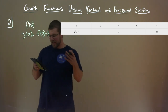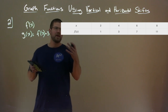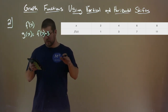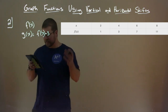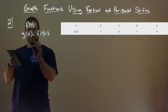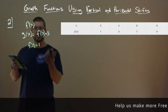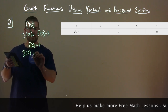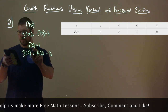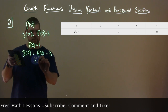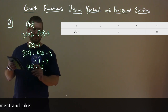What we have to do is take every input value of f of x and for the same input values, we're going to subtract 3 from f of x to get g of x. So for example, f of 2 is equal to 1. To find g of 2, we take g of 2 equals f of 2 minus 3, so 1 minus 3 is negative 2. Therefore g of 2 is going to equal negative 2.